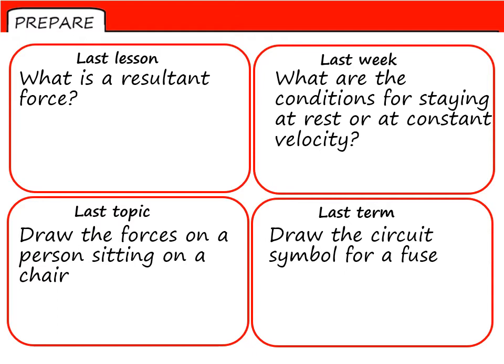Number one: what is a resultant force? Number two: what are the conditions for staying at rest or at a constant velocity? Number three: what forces are on a person sitting on a chair? Draw a little sketch and label it. And finally, draw a circuit symbol for a fuse. Pause the video, have a go and resume when ready.